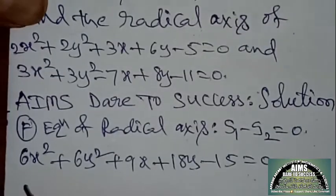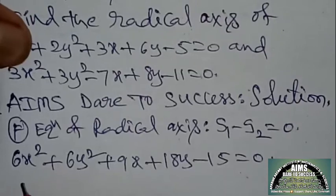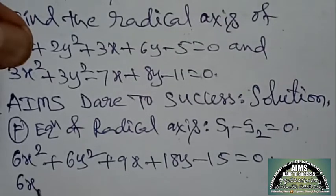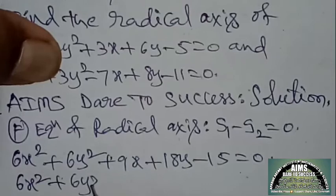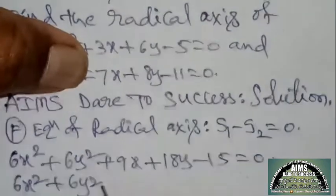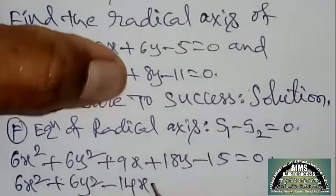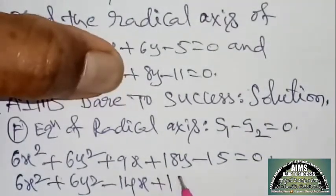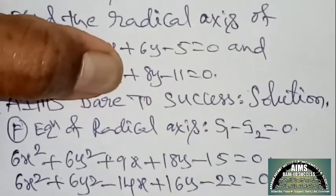And second circle multiplied by 2 gives: 6x² + 6y² − 14x + 16y − 22 = 0.